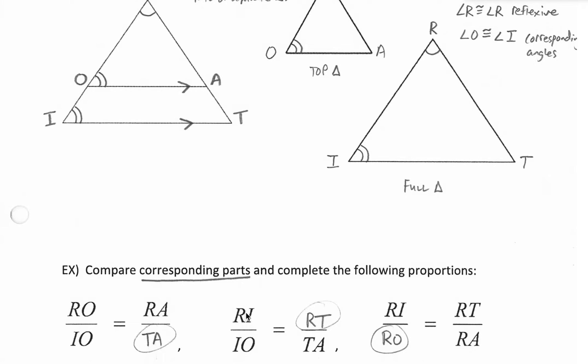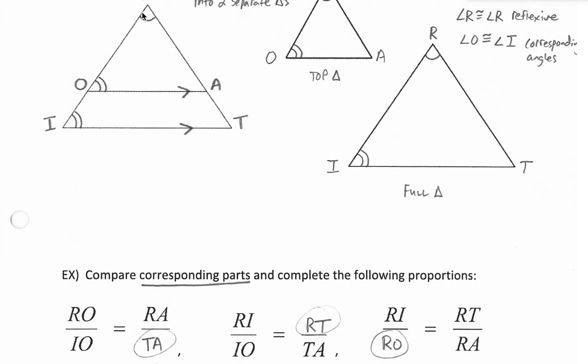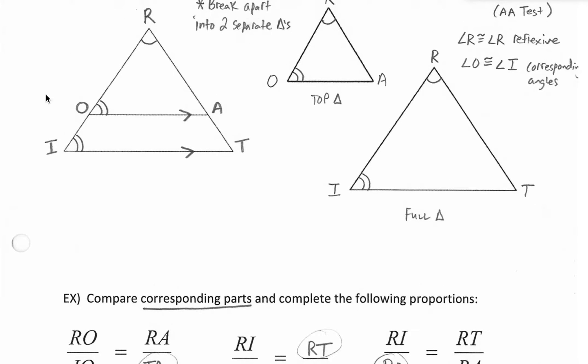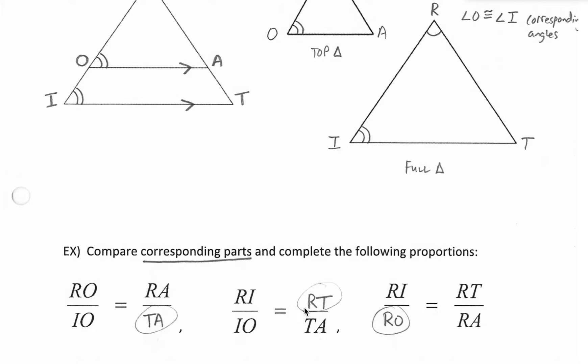RI in this next ratio is referring to the entire left side. Compare that to IO, which is just the bottom left. So setting up corresponding parts in our next ratio, but talking about the right side, we must need the total right side compared to the bottom right side. So RT compared to TA.